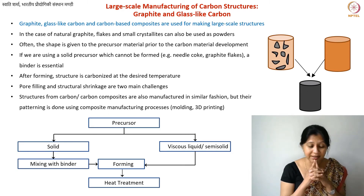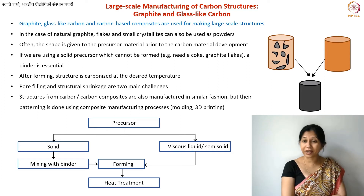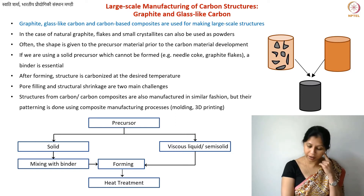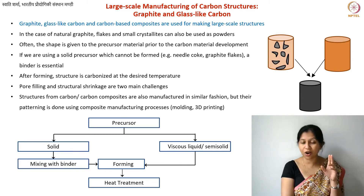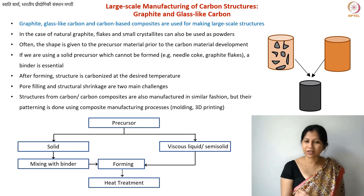Carbon-carbon composites are also used for making large-scale structures. We already learned about their manufacturing, the challenges related to drilling and the deformations that occur when machining carbon-carbon composites. The process is essentially the same: you mix carbon fibers inside a carbon resin matrix and then heat treat it. Again, you have the same challenges of pore filling and structural shrinkage. And there is one additional challenge: the adhesion of the fiber and matrix phase. For biomedical implants such as bone implants, you can also use 3D printing, as precision is very important and cost is secondary.